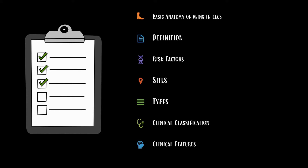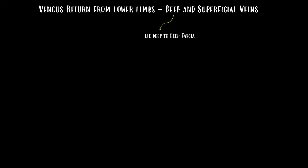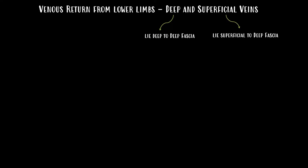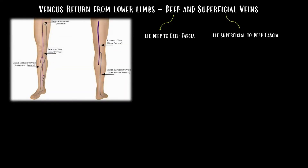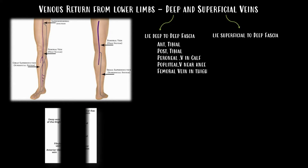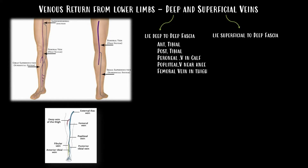Let us learn the basic anatomy of veins in the lower limbs. The venous return from the lower limbs usually comes from the deep and the superficial veins. The deep veins lie deep to the deep fascia and the superficial veins lie superficial to the deep fascia. The deep veins include the anterior tibial vein, the posterior tibial vein, peroneal vein, calf popliteal vein near the knee, and the femoral vein in the thigh. The superficial veins are the short saphenous vein and the long saphenous vein.